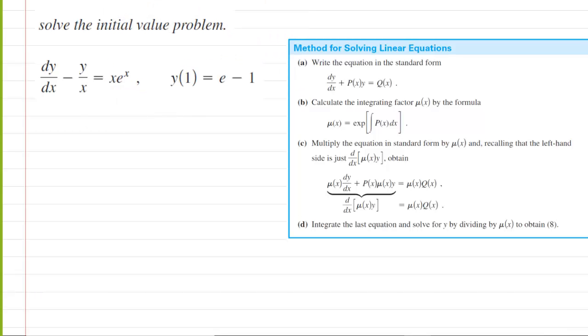The first step is to make sure that our differential equation is in standard form. In standard form we have dy/dx plus some function of x multiplied by y which is equal to another function of x. So we'll rewrite our differential equation as dy/dx plus negative 1 over x multiplied by y, and that's going to still equal x times e to the x.